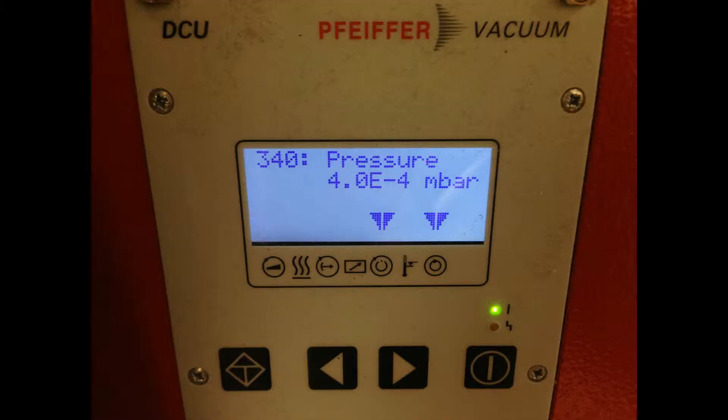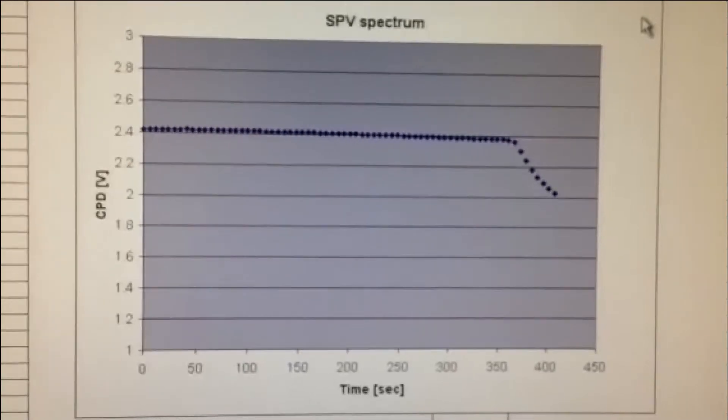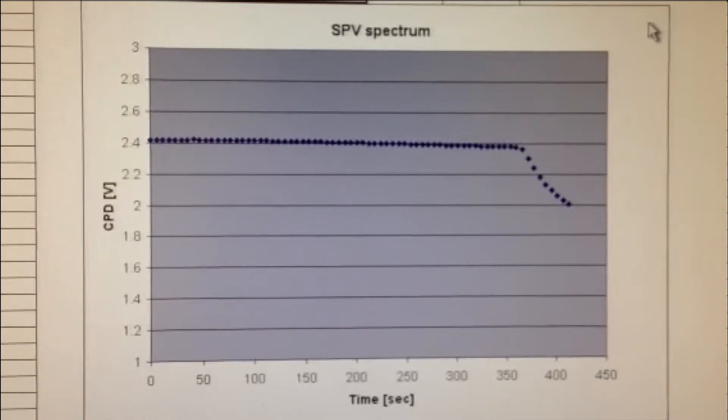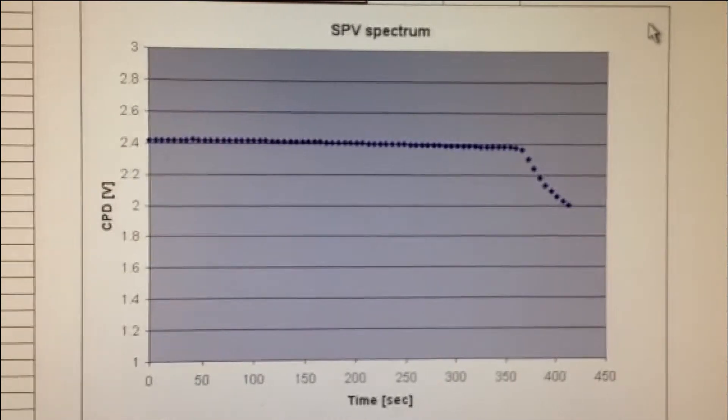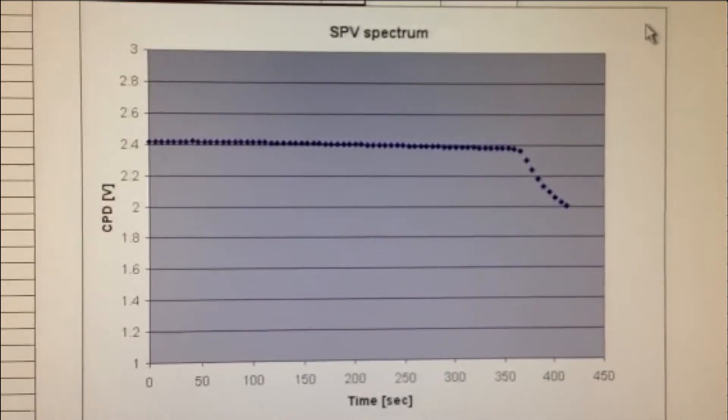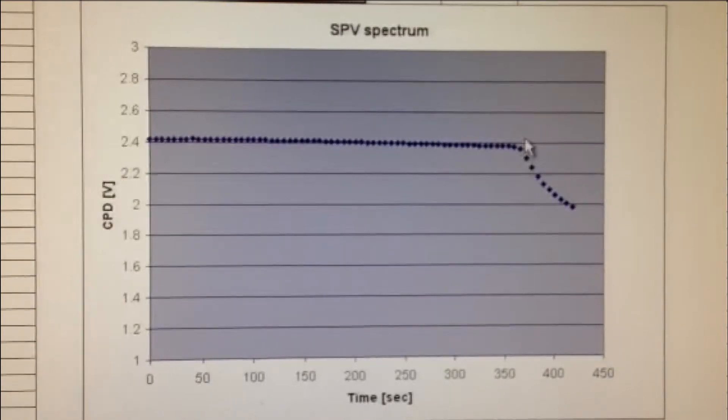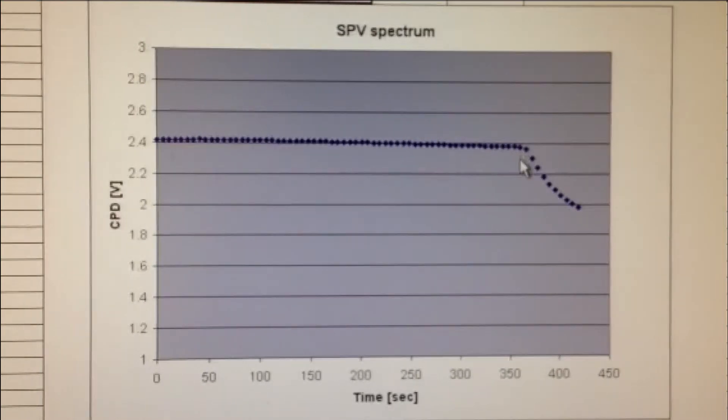So now the vacuum has reached the desired value, we can go ahead and start our SPV measurement. Here this graph shows the real-time data collection. CPD value is first recorded in the dark until the reading is steady. Then the shutter is open as indicated and a monochromatic scan is performed from low energy to high energy photons.